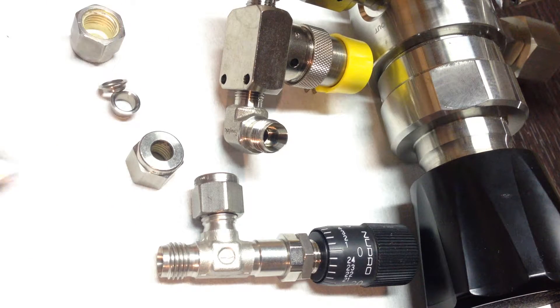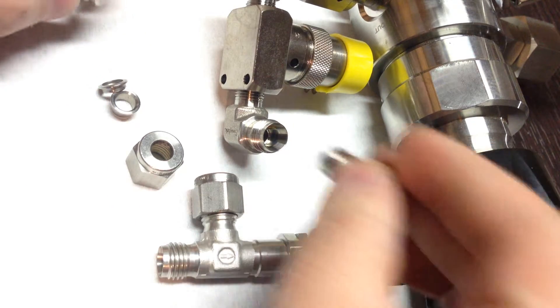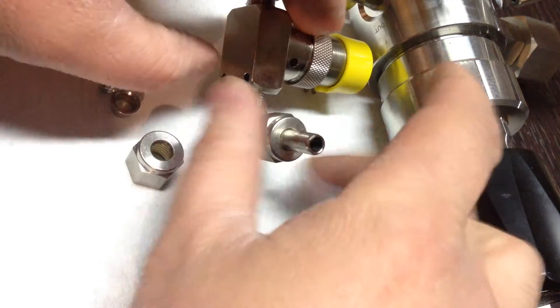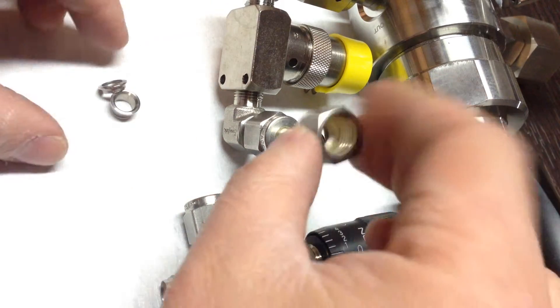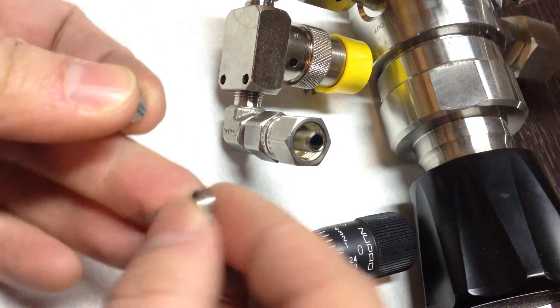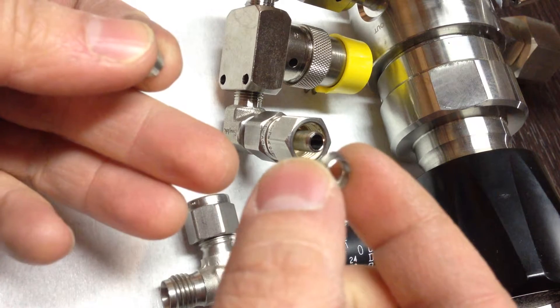The first thing we do is put the port connector on and the nut over it. And then the other nut the opposite way, the small ferrule first, small side facing up.